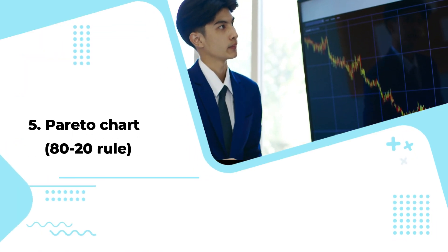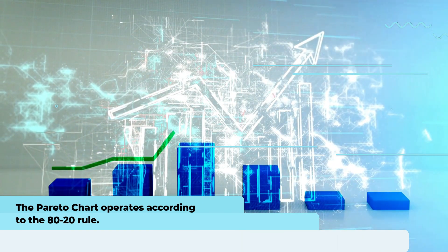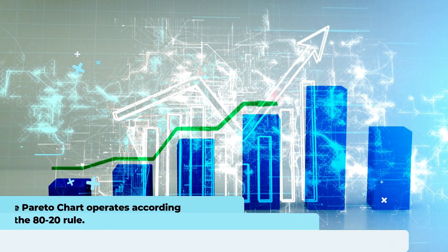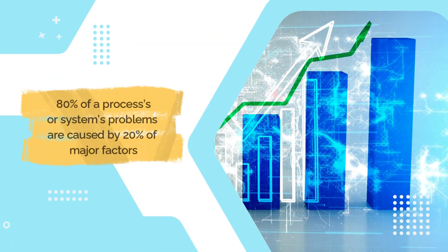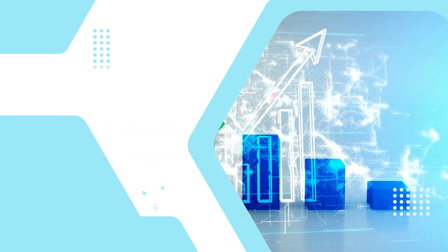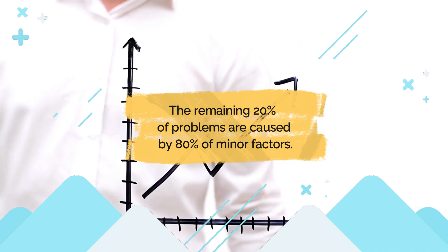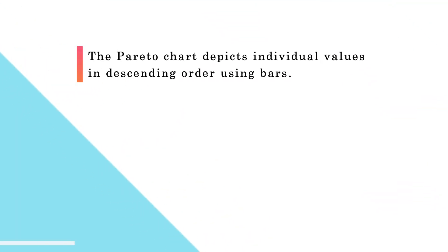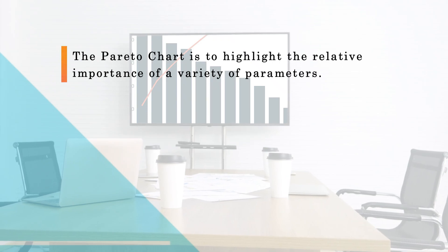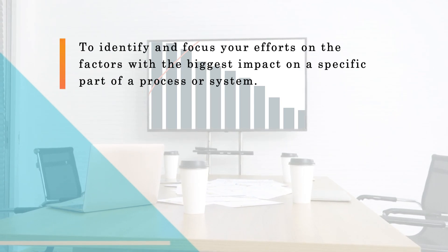These categories can help you identify the probable source of your problem while keeping your diagram structured and orderly. Fifth is the Pareto chart, based on the 80/20 rule. As a quality control tool, the Pareto chart operates according to the 80/20 rule, which assumes that in any process, 80% of a process's problems are caused by 20% of major factors, often referred to as the vital few. The remaining 20% of problems are caused by 80% of minor factors. A combination of a bar and line graph, the Pareto chart depicts individual values in descending order using bars, while the cumulative total is represented by the line, highlighting the relative importance of various parameters.